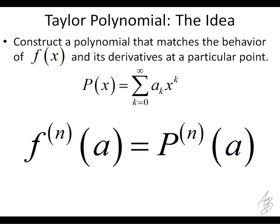We're going to start by doing this at zero because zero is a lot easier to work with. What we're going to do is take this power series and match up the value of the power series — for each of its derivatives — to the value of the derivative of the function itself, or the higher order derivatives.